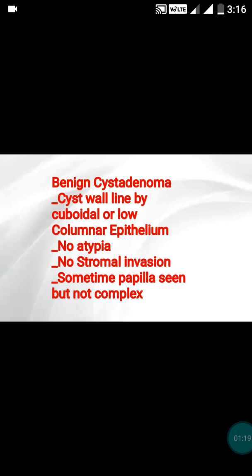You can see on this screen that the cyst wall is lined by cuboidal or low columnar epithelium — that is the characteristic feature of any serous tumor. Since it is a benign tumor, nuclear atypia is not seen, and there should also be absence of stromal invasion. Sometimes papillae might be seen, but they should not be complex — that word is important: not complex.